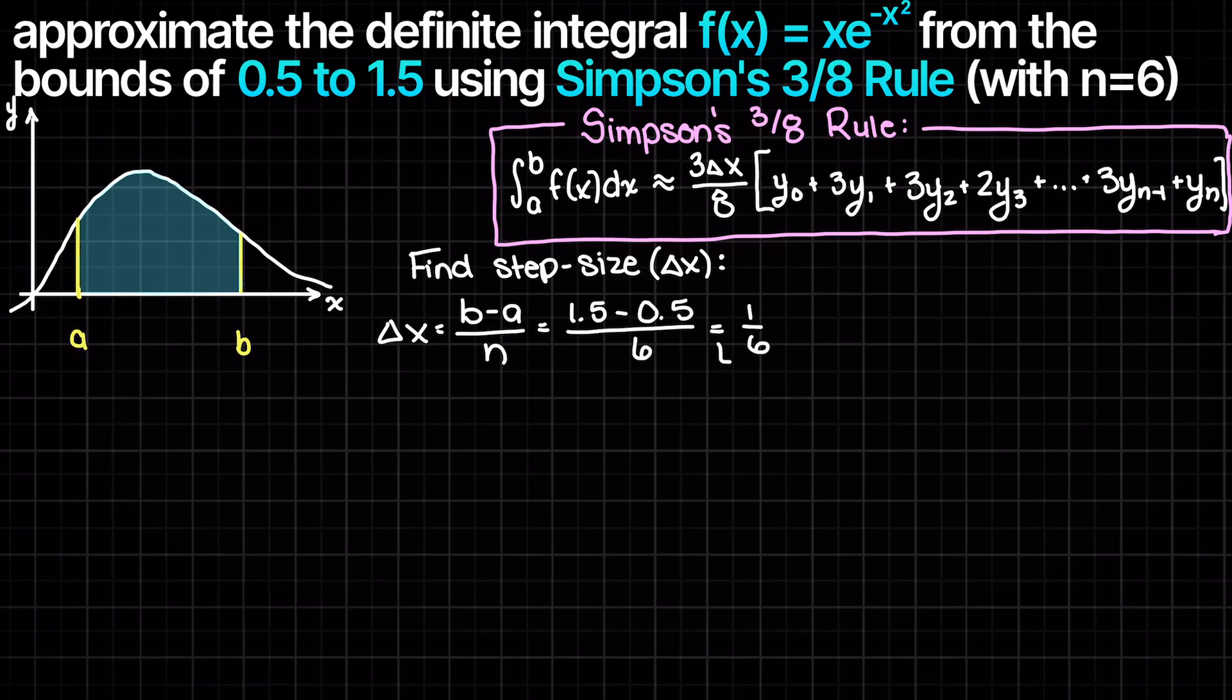0.5 over 6, which gives us a step size of 0.166 repeating. Let's add these divisions to our graph now.